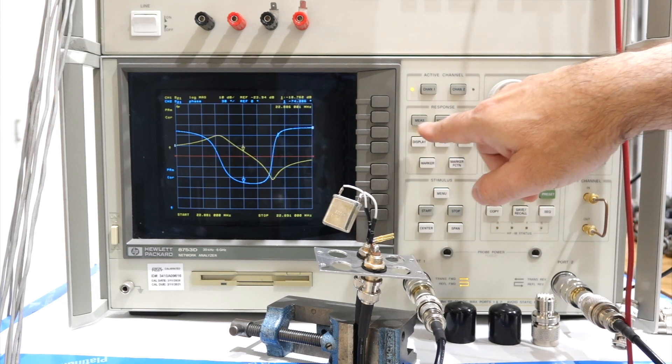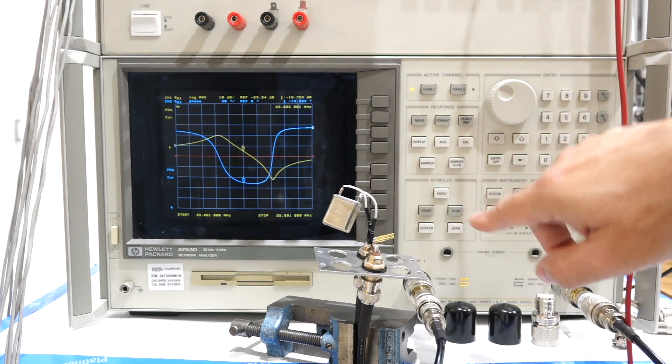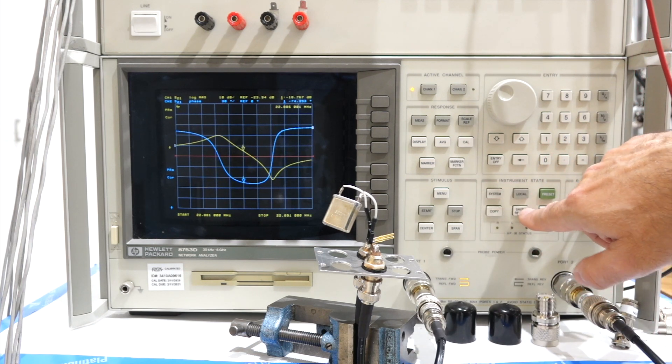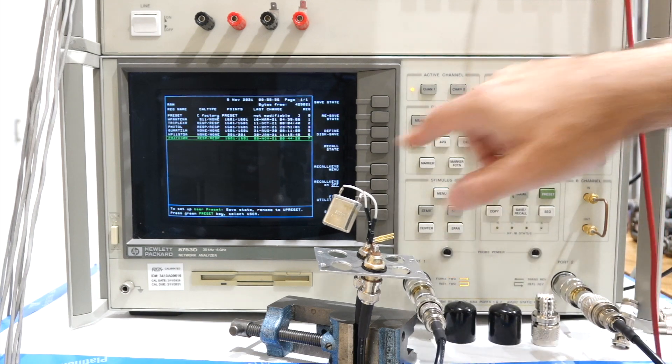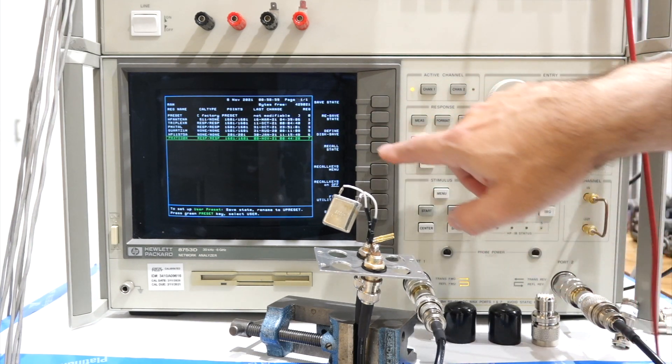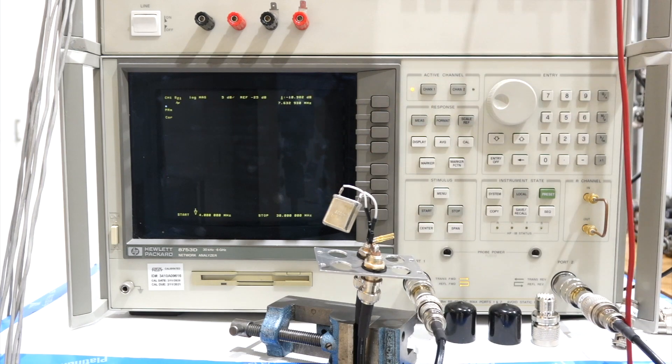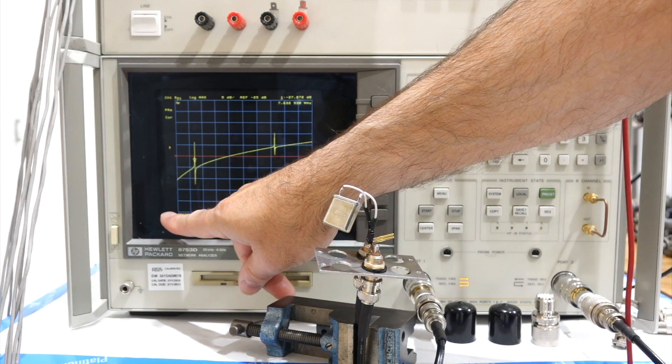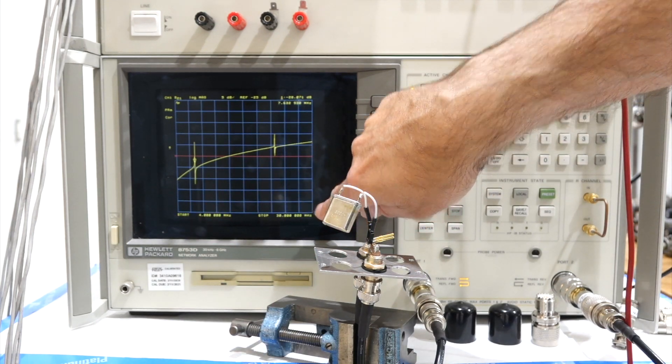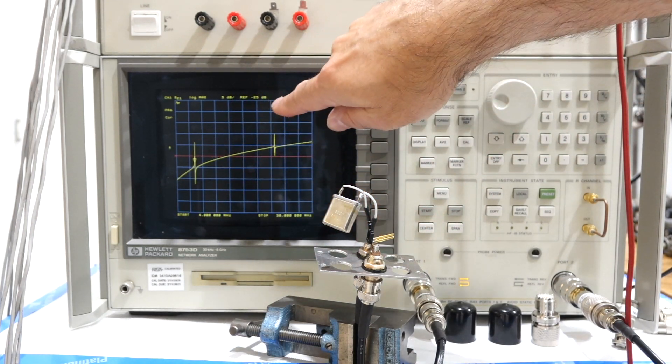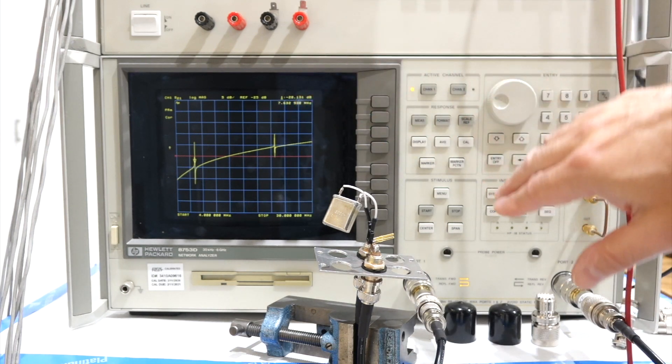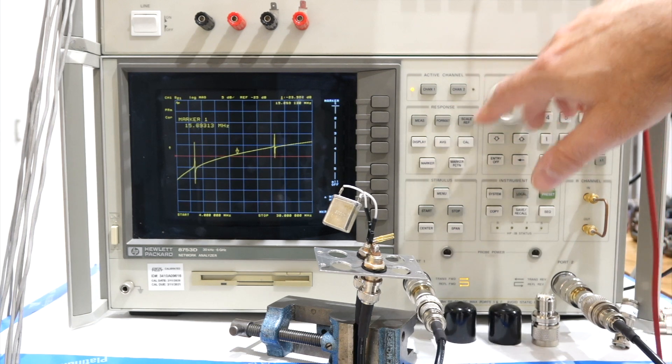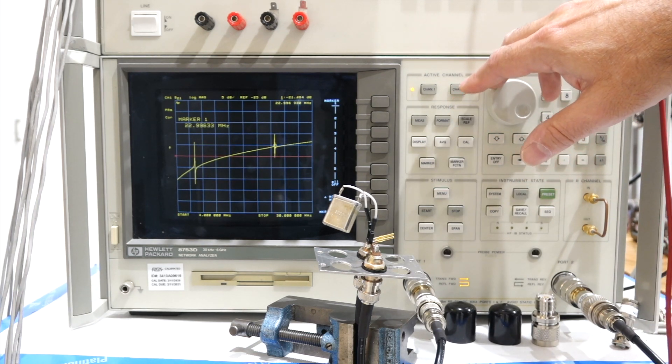So he thinks it's a third overtone crystal. And I believe he's right. And then if we go and broaden our point of view, save recall. And I have one that goes from 4 to 30 MHz. Recall. And now I have completely changed the scale. But now it starts at 4 MHz, and it goes to 30 MHz. And sure enough, there's a big resonance around 7 MHz. And that is the fundamental. So this guy is working on its third overtone.